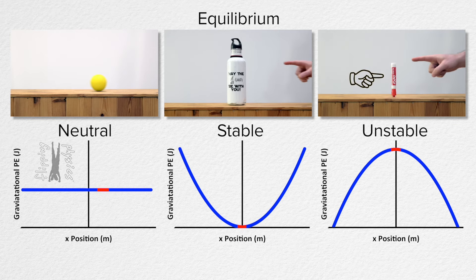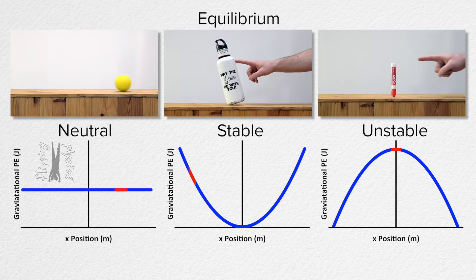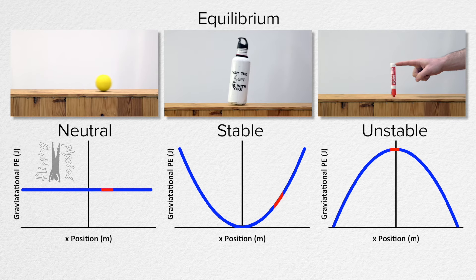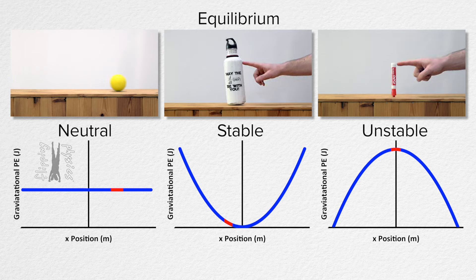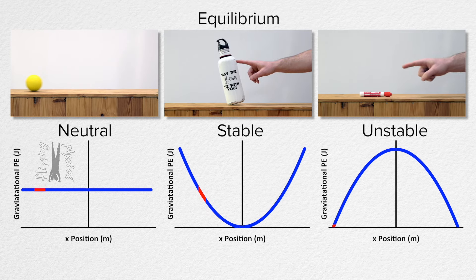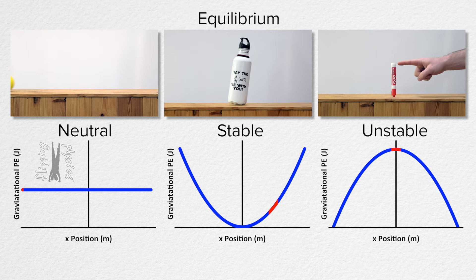This dry erase marker is in unstable equilibrium because its gravitational potential energy decreases as its position moves away from the equilibrium position. This is because the center of mass of the dry erase marker goes down as the position goes away from equilibrium. In other words, the dry erase marker naturally moves away from the equilibrium position when it loses gravitational potential energy.